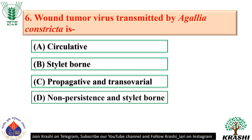Question number 6: Wound tumor virus transmitted by Agalia constricta is propagative and transovarial. Here viruses have a defined latent period during which the leafhopper cannot transmit viruses after an acquisition feed.